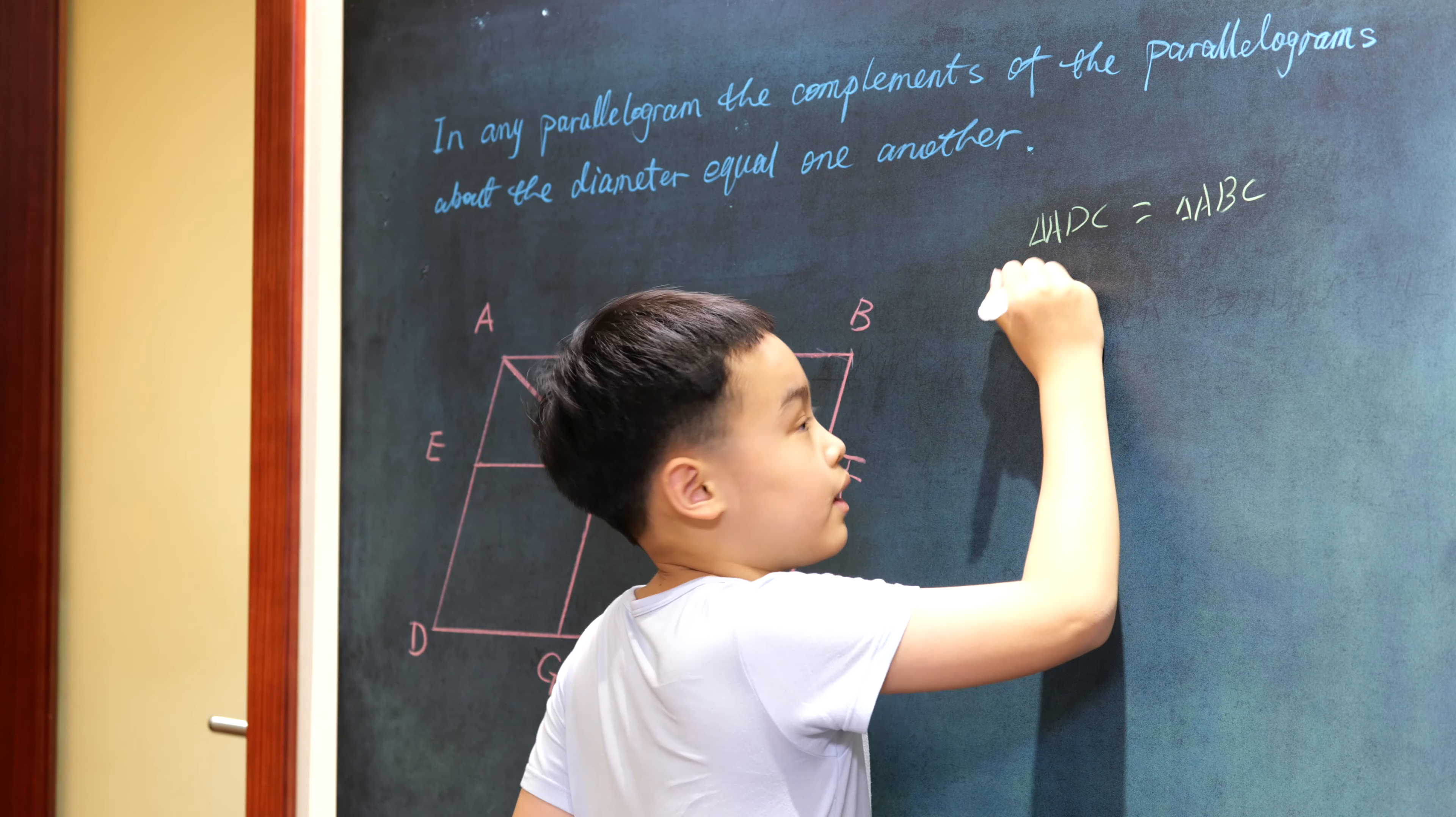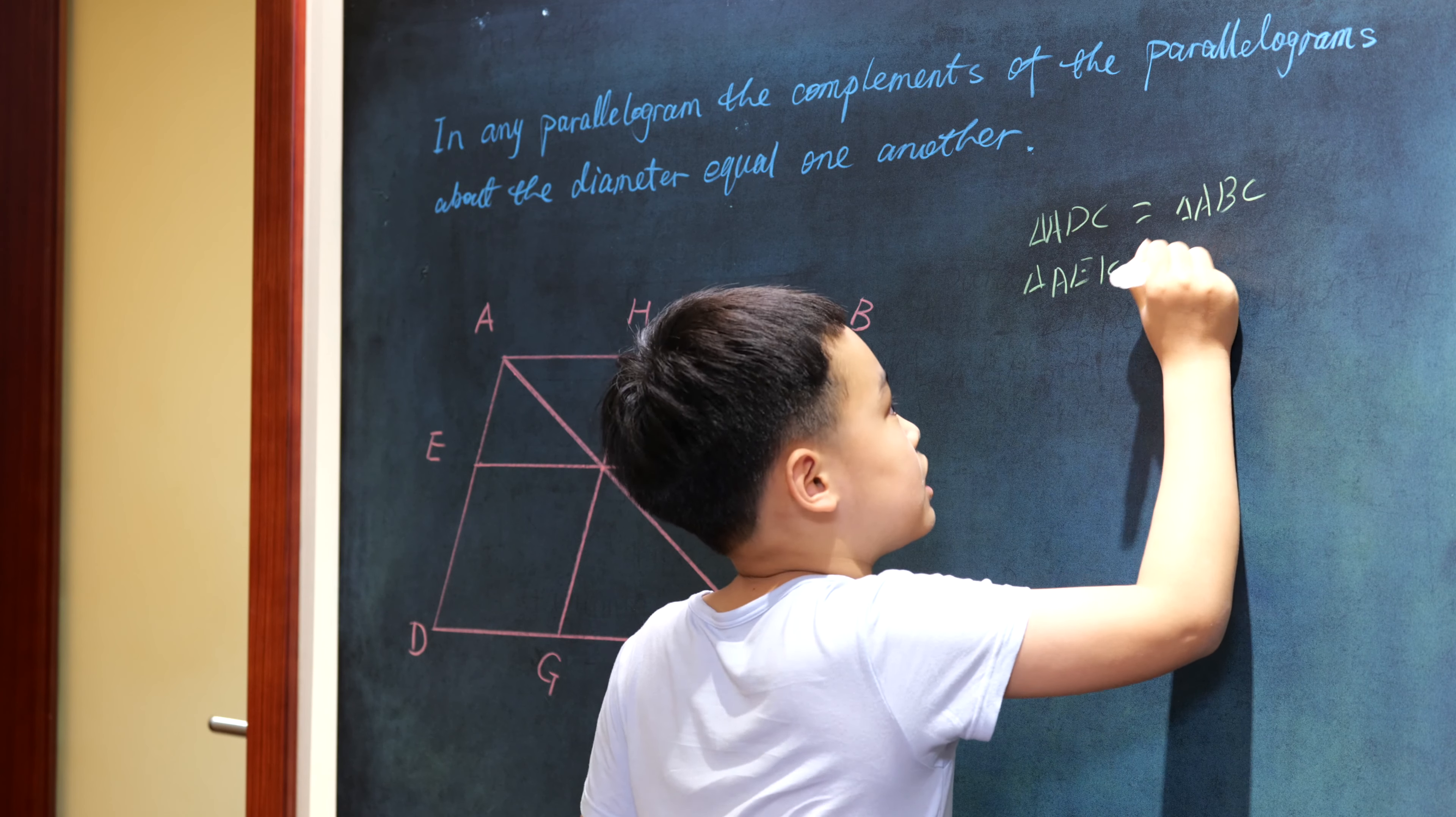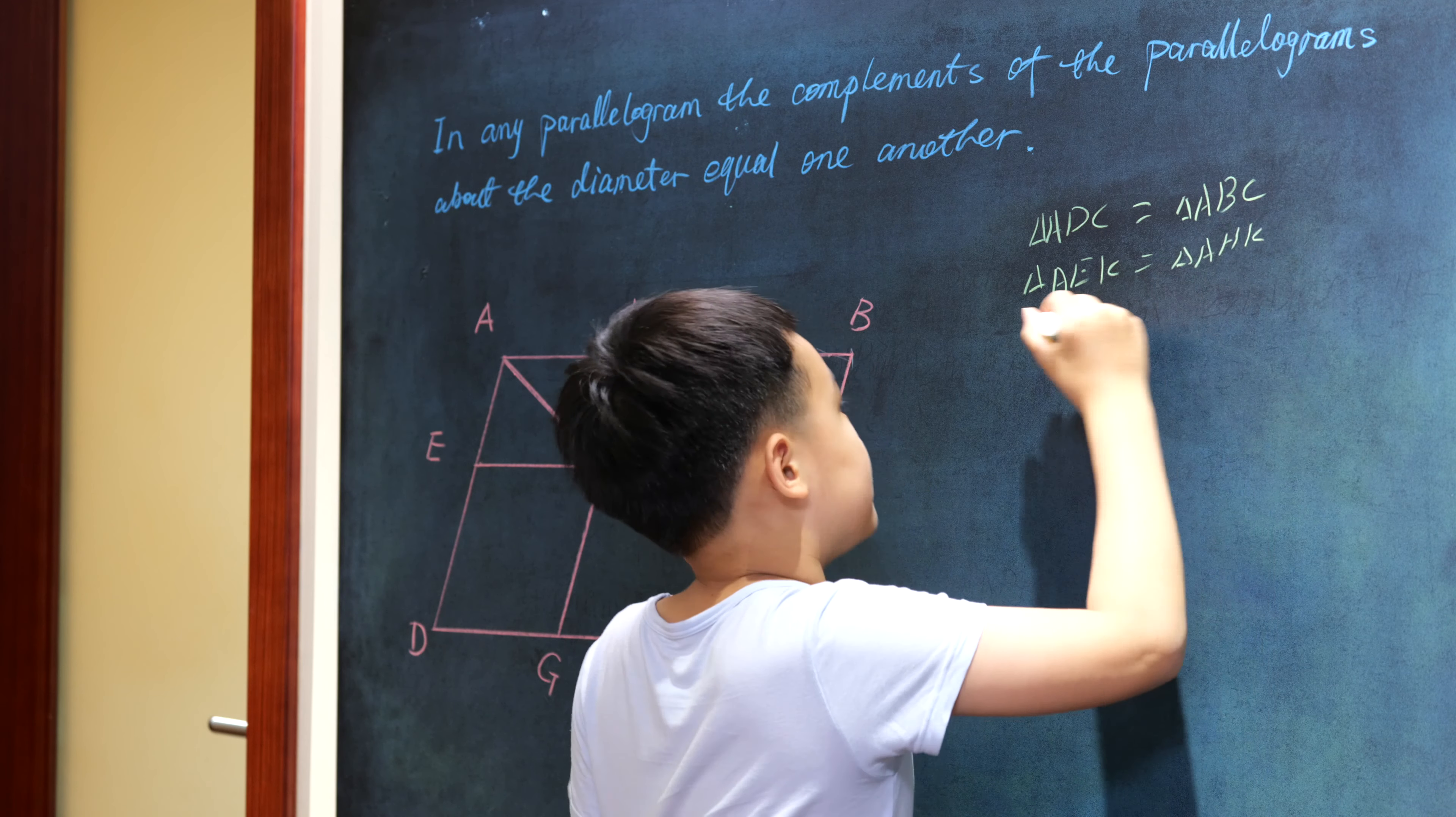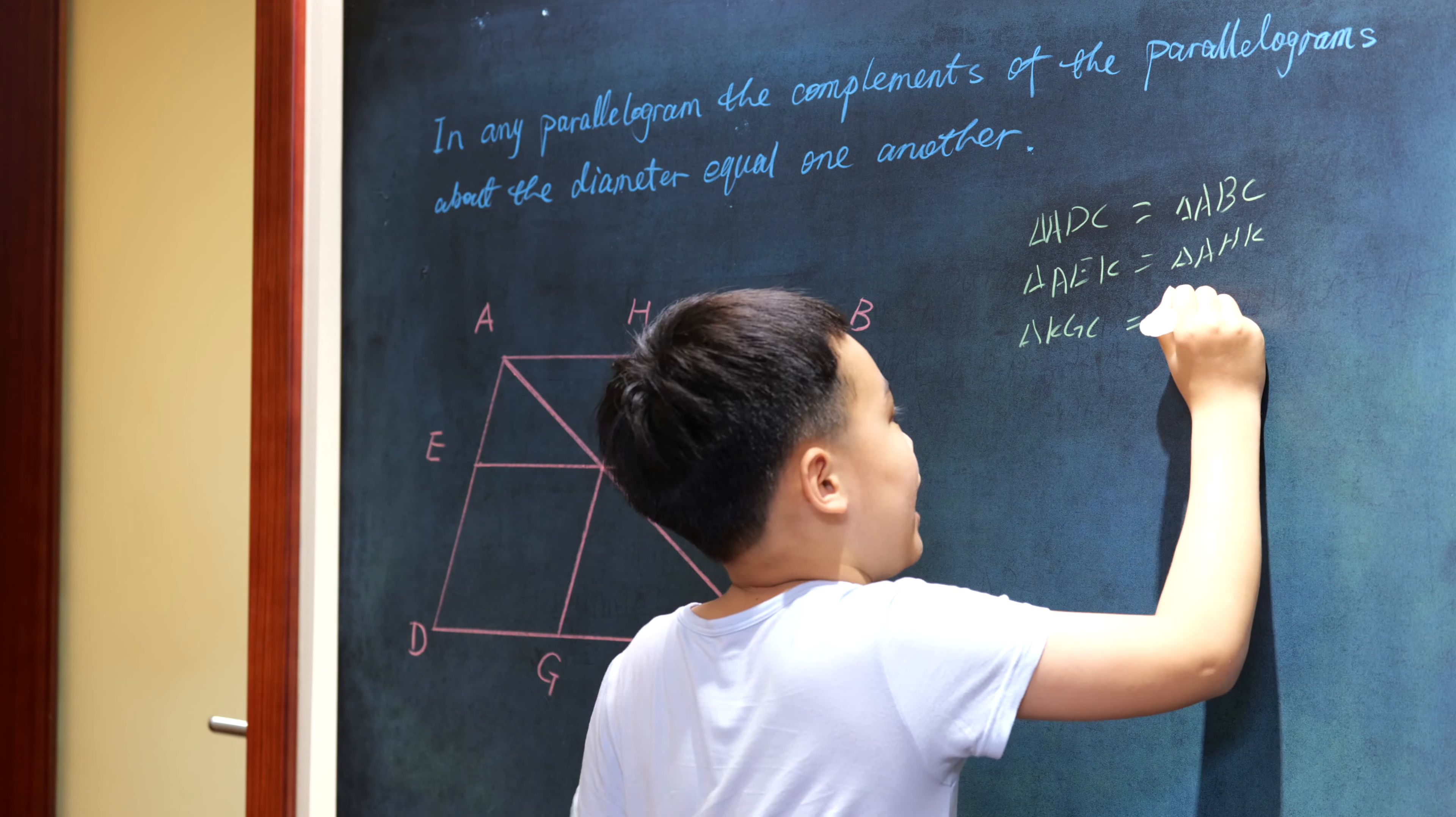And the triangle, in like manner, triangle AEK is equal to triangle AHK, and triangle KGC to triangle KFC.